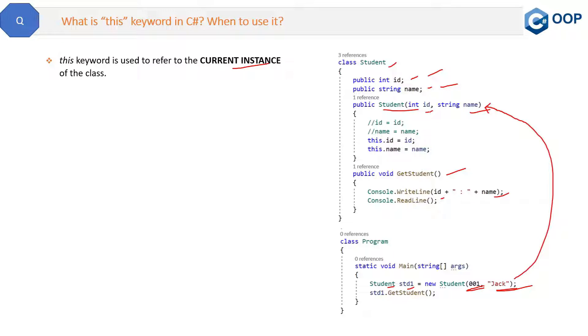These parameters then will pass these values inside the method. Now how will we recognize that these fields and these parameters are different, because the name is the same? Here we will use the 'this' keyword to create the difference. We will use the 'this' keyword with the fields because these fields are the members of the class.